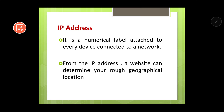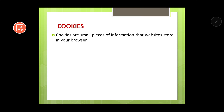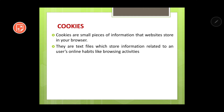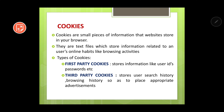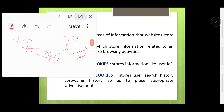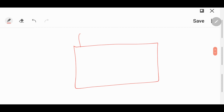The next way in which websites track us is cookies. Cookies are small pieces of information that websites store in your web browser. When you visit a particular website, small pieces of information come along with it, which are used to track your online activity over that website. These are text files which store information related to a user's online habits like browsing activities. There are two types of cookies.